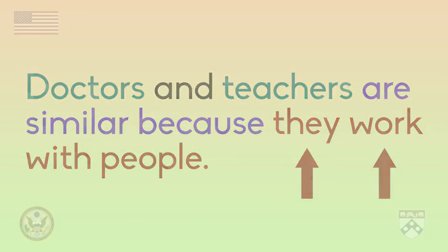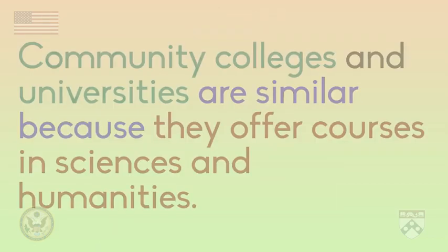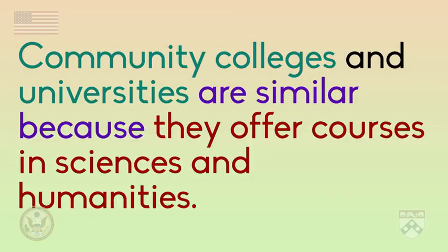Here is another example comparing two places for education: community colleges and universities. Using the same structure, the sentence would look like this: 'Community colleges and universities are similar because they offer courses in sciences and humanities.' Notice that the independent clause in red has a subject, 'they,' and a verb, 'offer.'